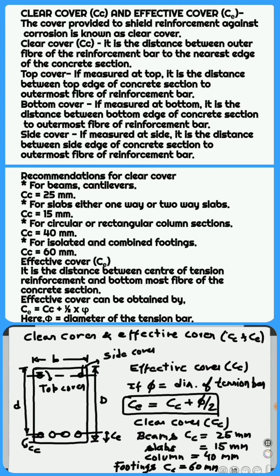Effective cover can be obtained by adding half the diameter of the tension reinforcement to the clear cover. Ca equals Cc plus one half times phi. Here, phi equals diameter of the tension reinforcement.